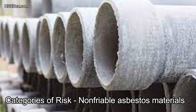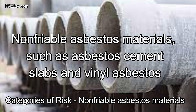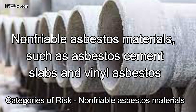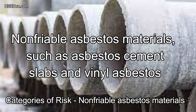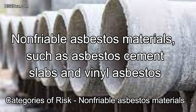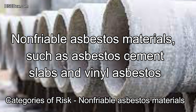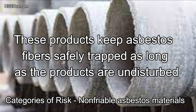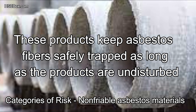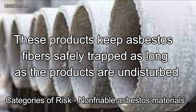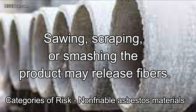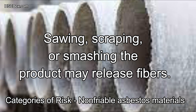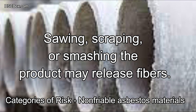Non-friable asbestos materials, such as asbestos cement slabs and vinyl asbestos tiles, are durable. These products keep asbestos fibers safely trapped as long as the products are undisturbed. However, sawing, scraping, or smashing the product may release fibers.